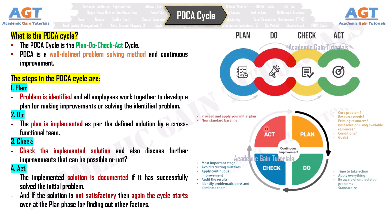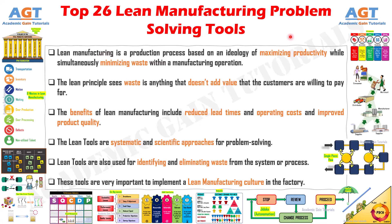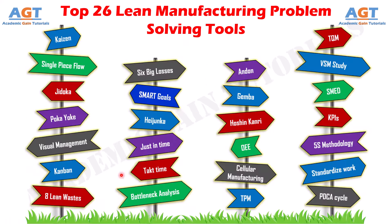Lean manufacturing is a methodology that can help streamline and improve manufacturing processes or other services in order to provide enhanced benefits for customers while saving time and money through the elimination of waste. Lean is best applied across the entirety of an organization with continual monitoring and improvements, supported by employees at all levels. We have discussed the 26 top lean manufacturing problem-solving methods or tools and their benefits. If this lecture was helpful, give it a thumbs up and subscribe to the channel. Thank you.